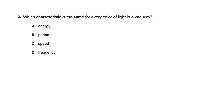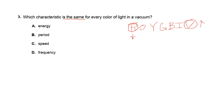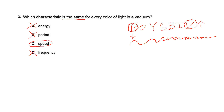Number three: which characteristic is the same for every color of light in a vacuum? Thinking about ROYGBIV — red has the lowest energy and violet has the greatest. So energy is not the same across all colors, eliminating A. Period and frequency also vary across the spectrum — wavelength gets shorter as we go toward violet. The one thing that remains the same for every color of light in a vacuum is speed, since all electromagnetic waves travel at 3.0×10⁸ meters per second. The answer is C.